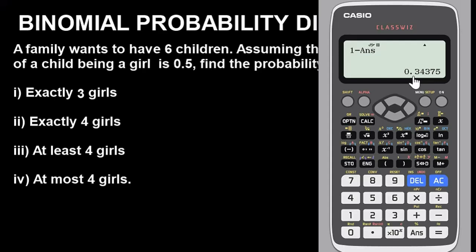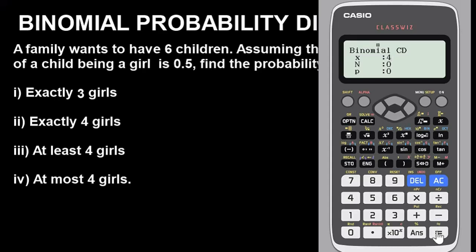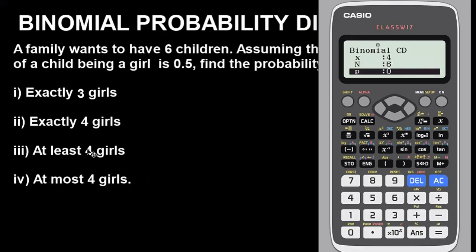Now for 'at most four girls', it is very simple. Go back to Distribution, press 7, then press 1 for Binomial CD, then 2 for Variable. For 'at most', you do not decrease the value — just enter the exact value. Put X=4, then N=6, and P=0.5. Press Enter and you get the probability that the family will have at most four girls.